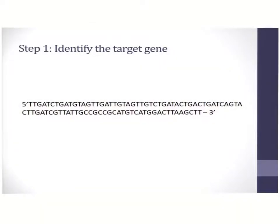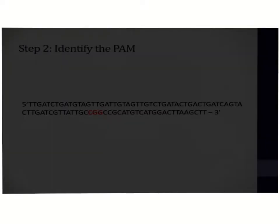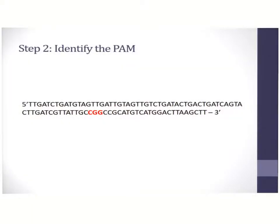The first step is the identification of the target gene. In this case, we have identified a target gene indicated in black. The next step involves identification of the PAM motif — in this case, it is CGG.